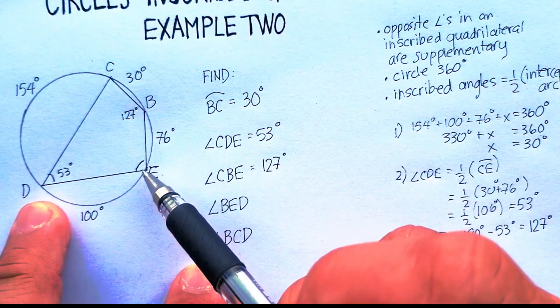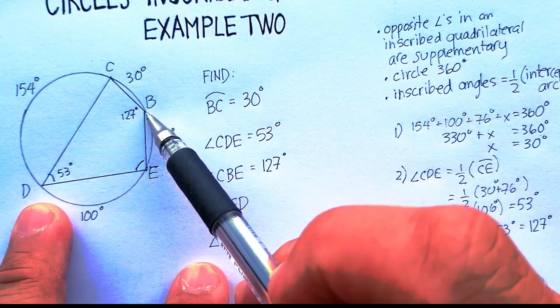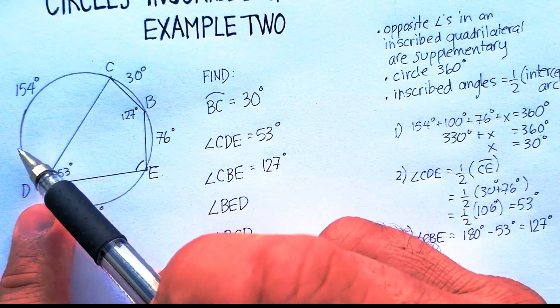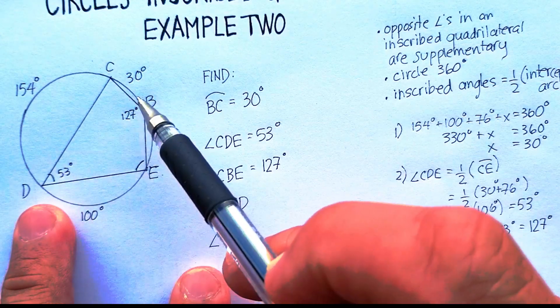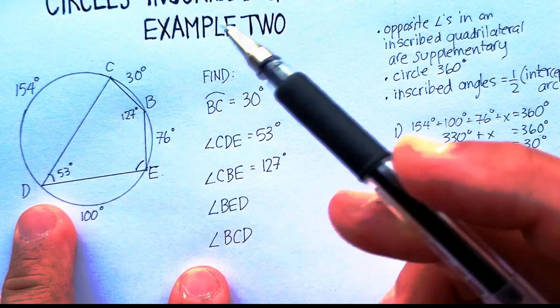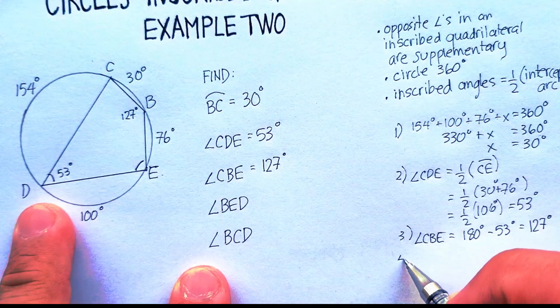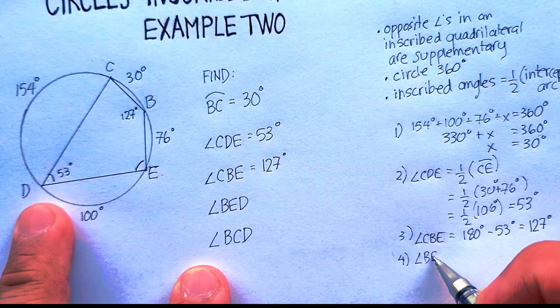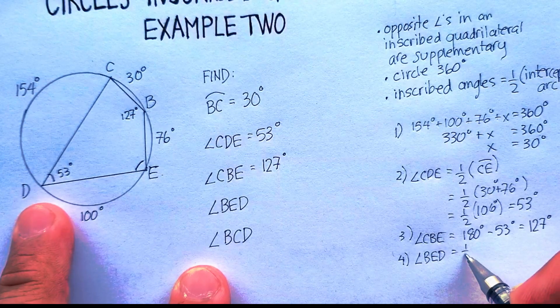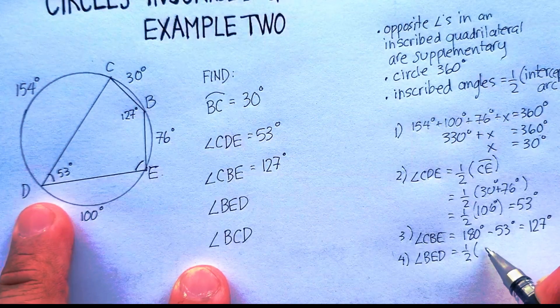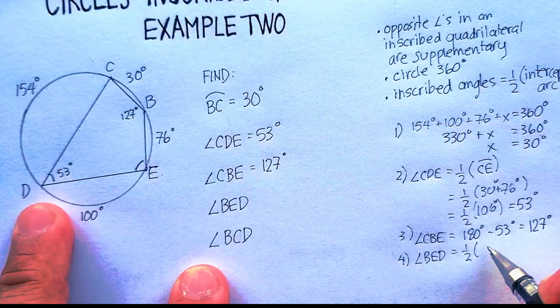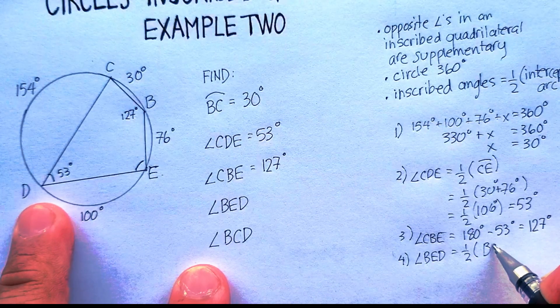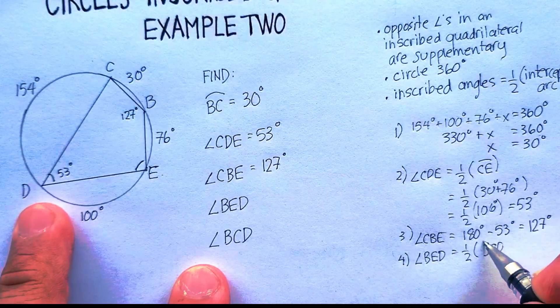is one half of arc BCD. So let me just write that up. Angle BED is one half arc BCD.